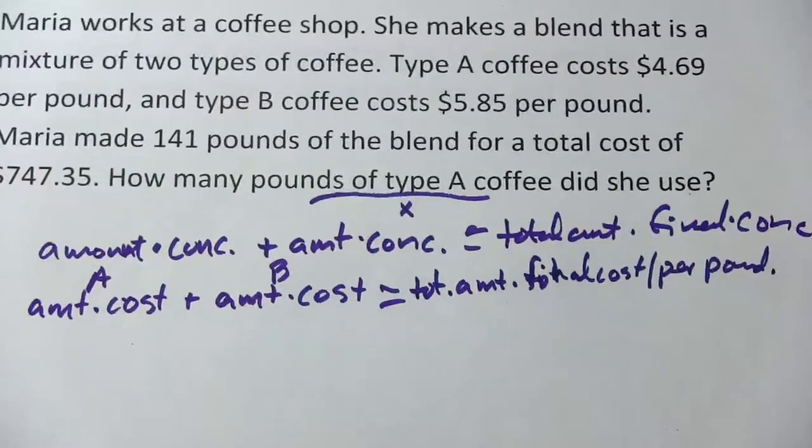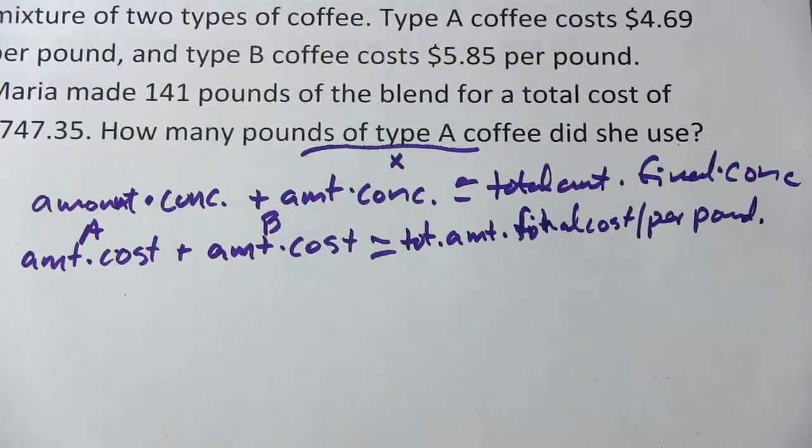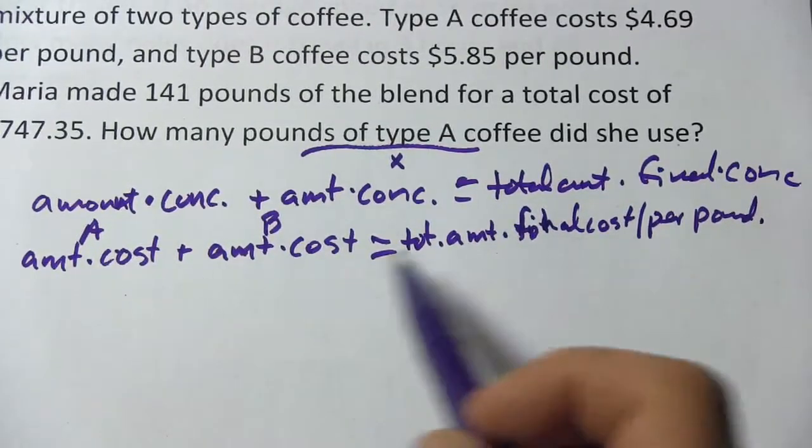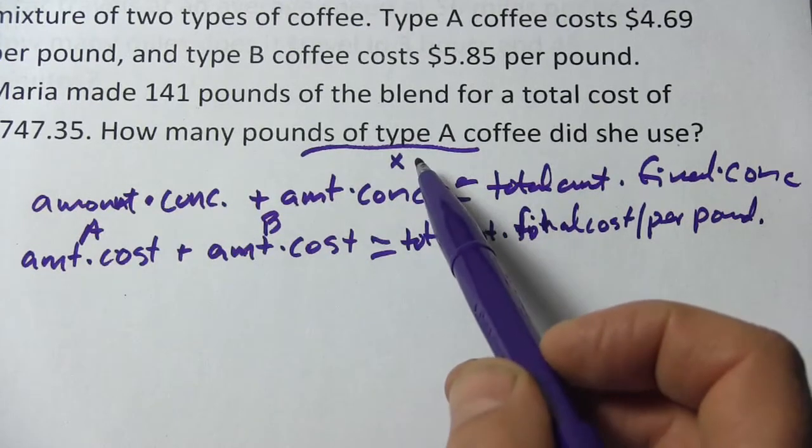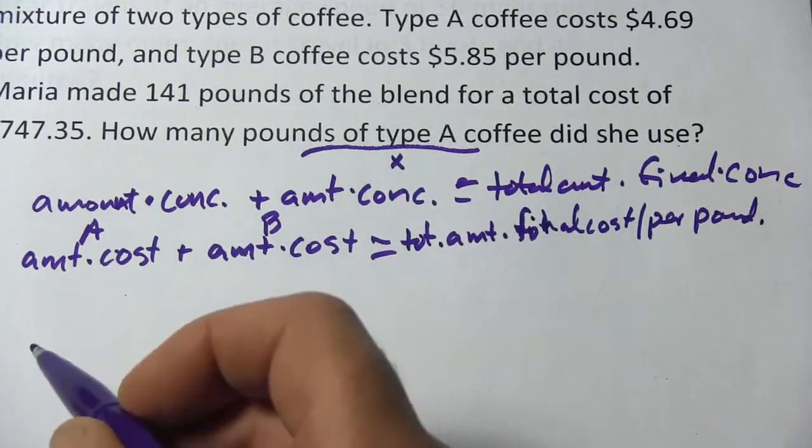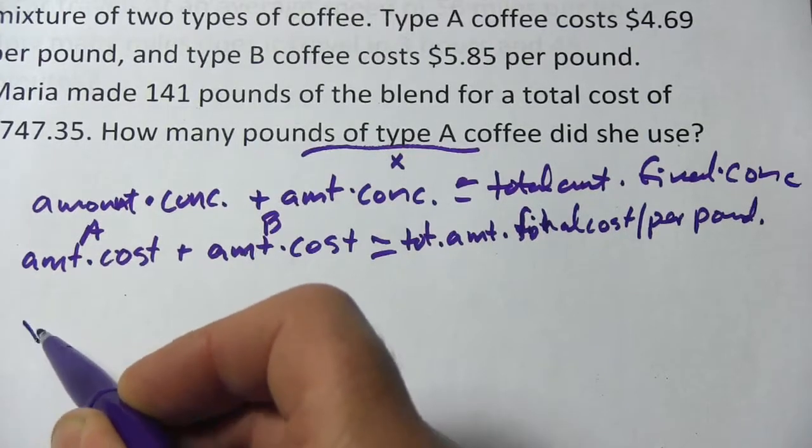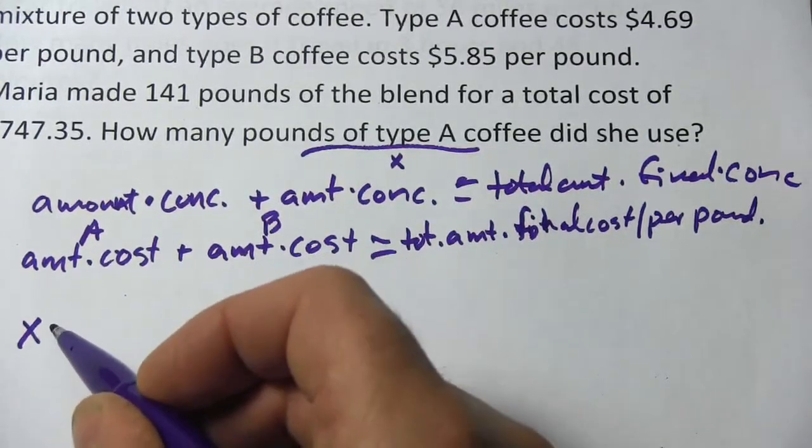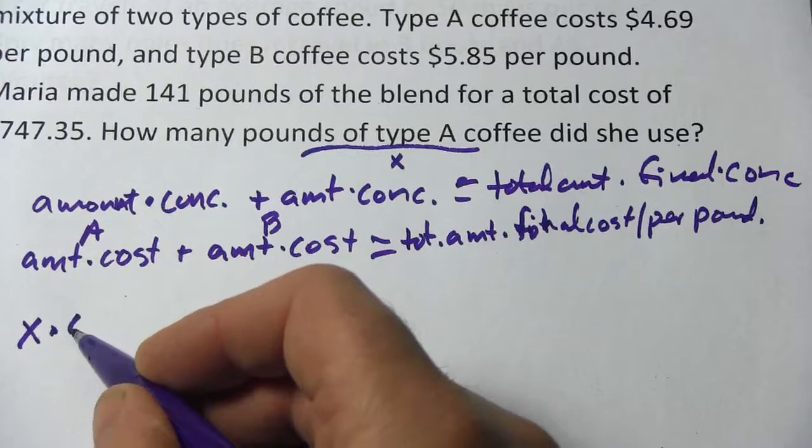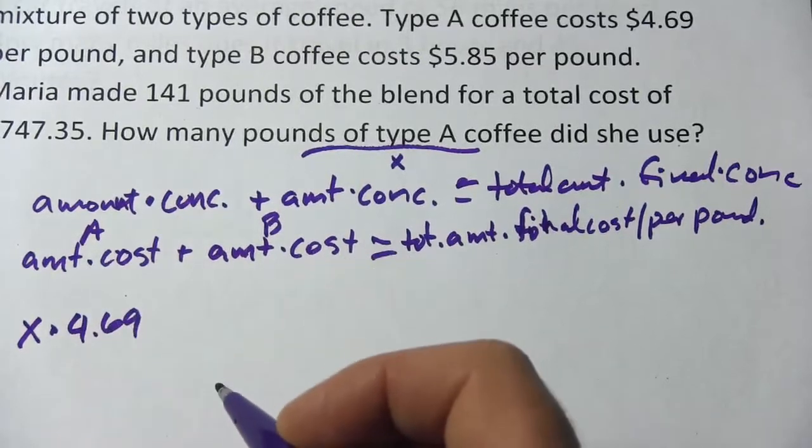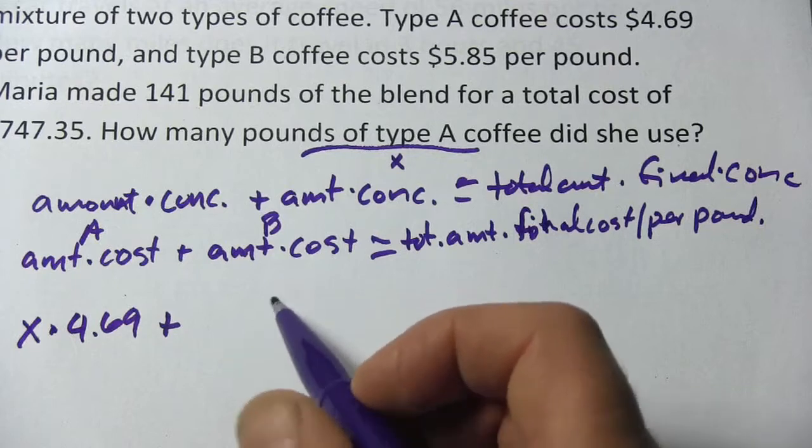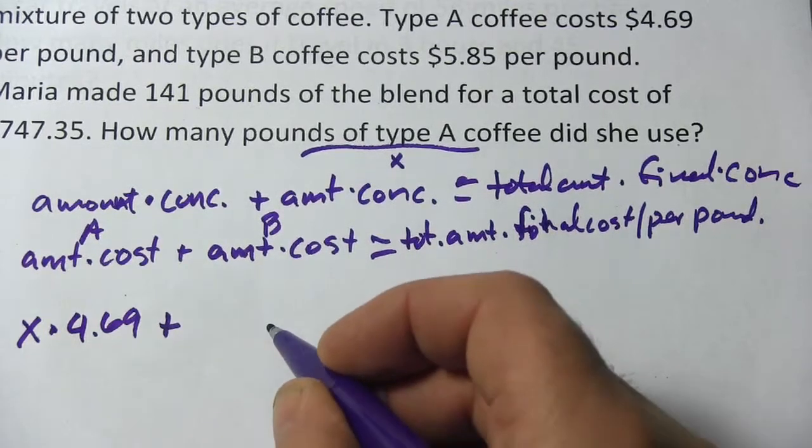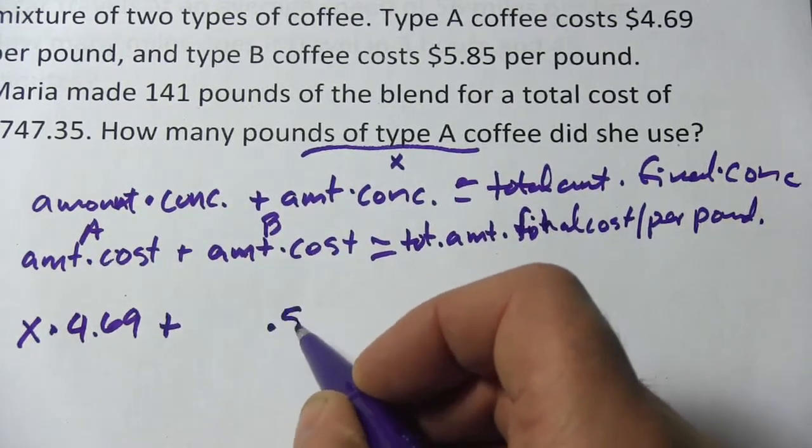This one's a little bit more complicated than your typical problem of this type. But let's see what we can plug in into this long formula. We don't know the amount of type A coffee. That's our X. That's what we're looking for. So we'll put that in X for that. We do know the cost. So we're going to multiply that by $4.69. Now B, we don't know the amount for that yet either, but we do know the cost. I'm just going to leave a blank there. And the cost is $5.85.